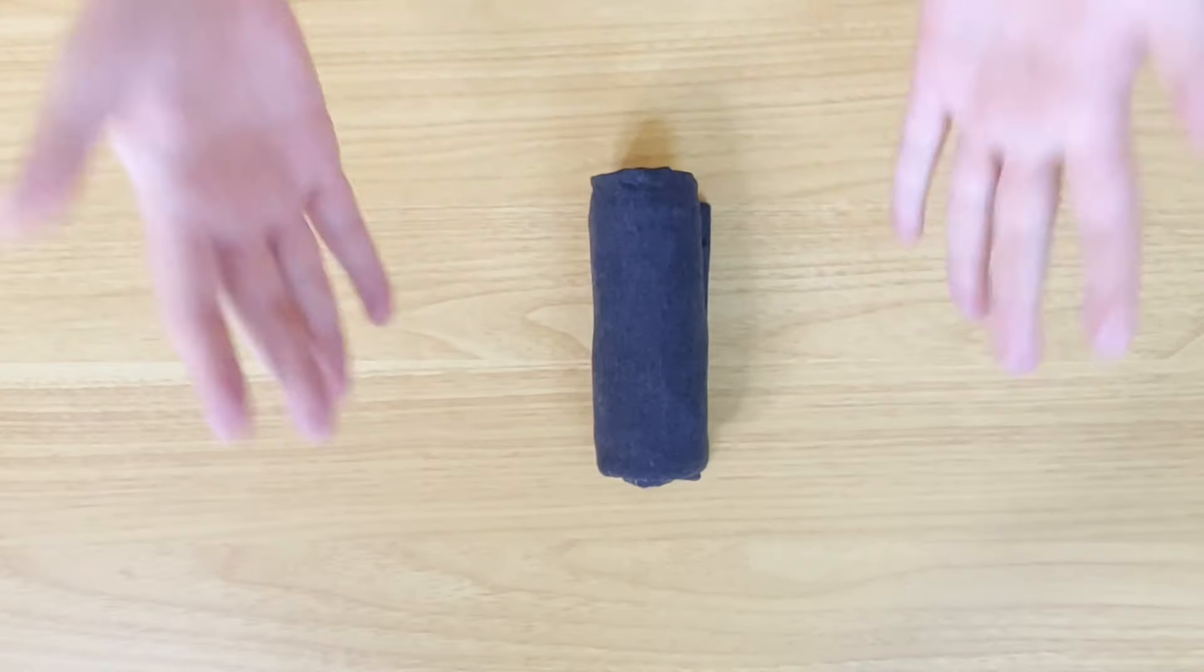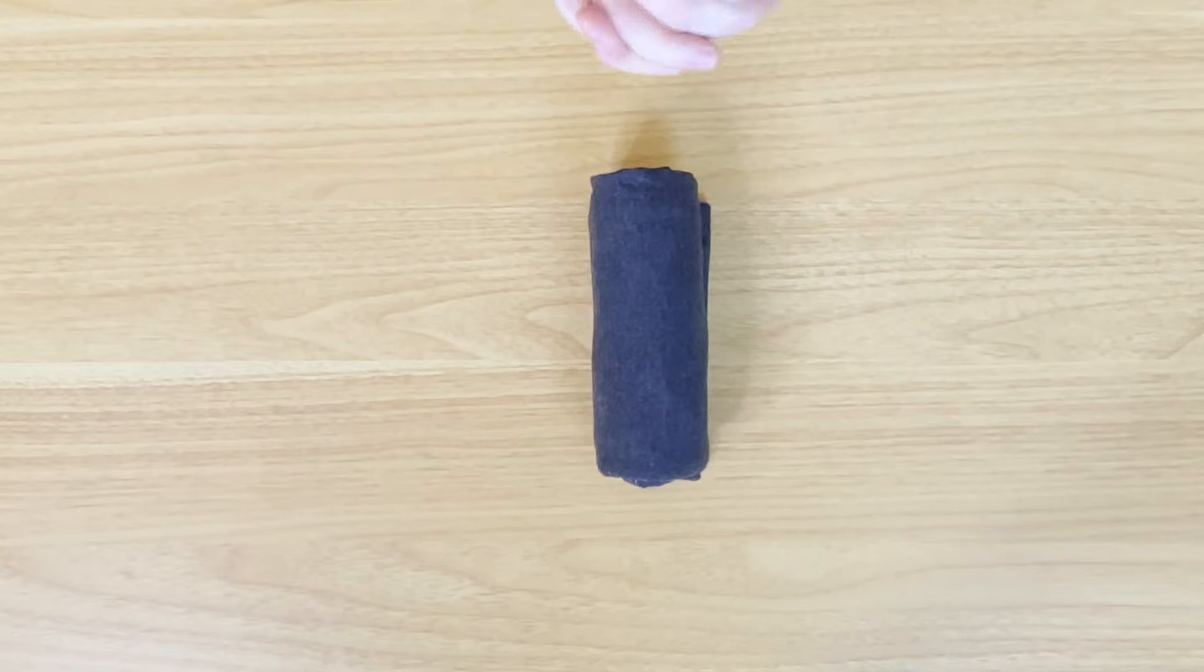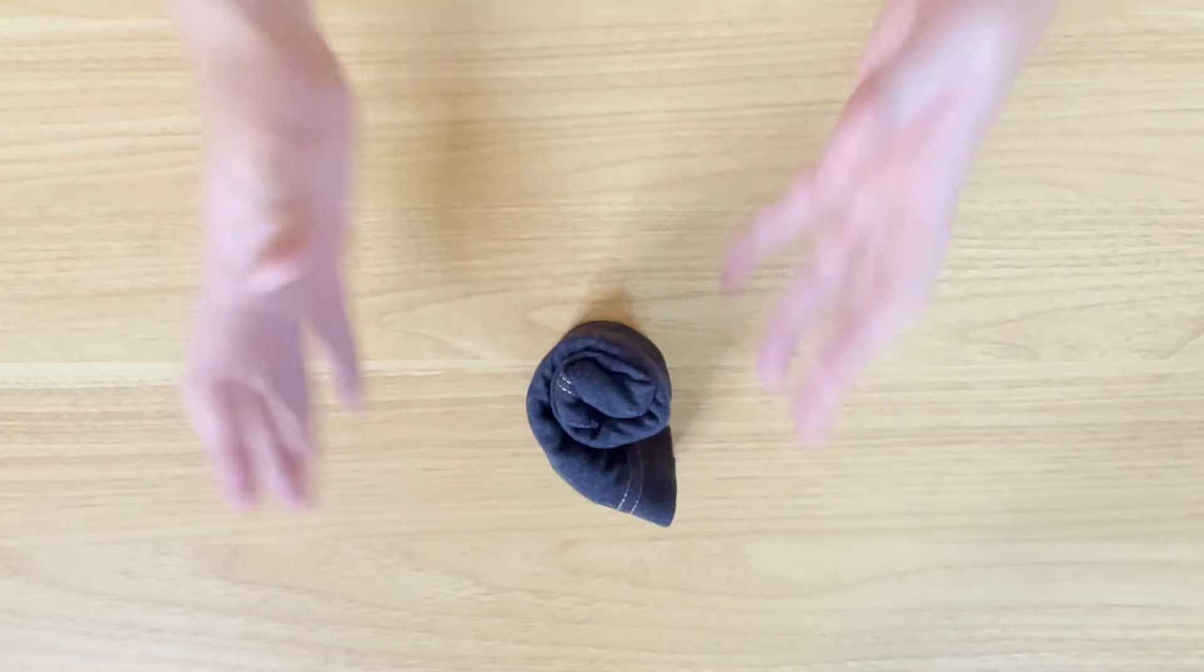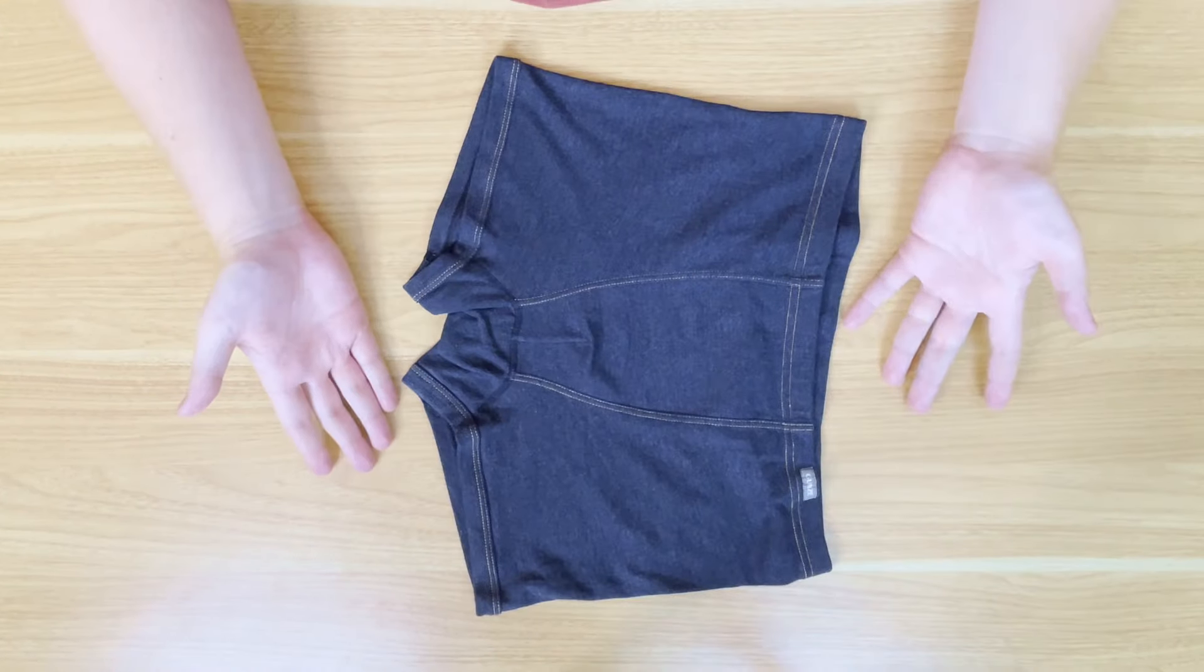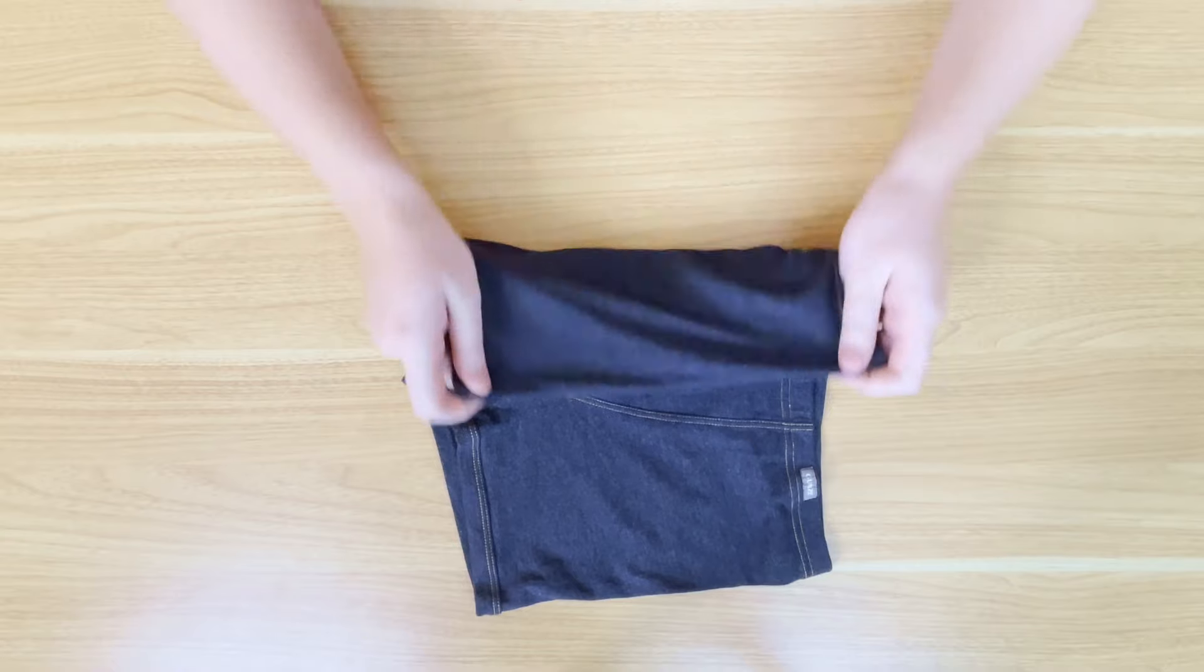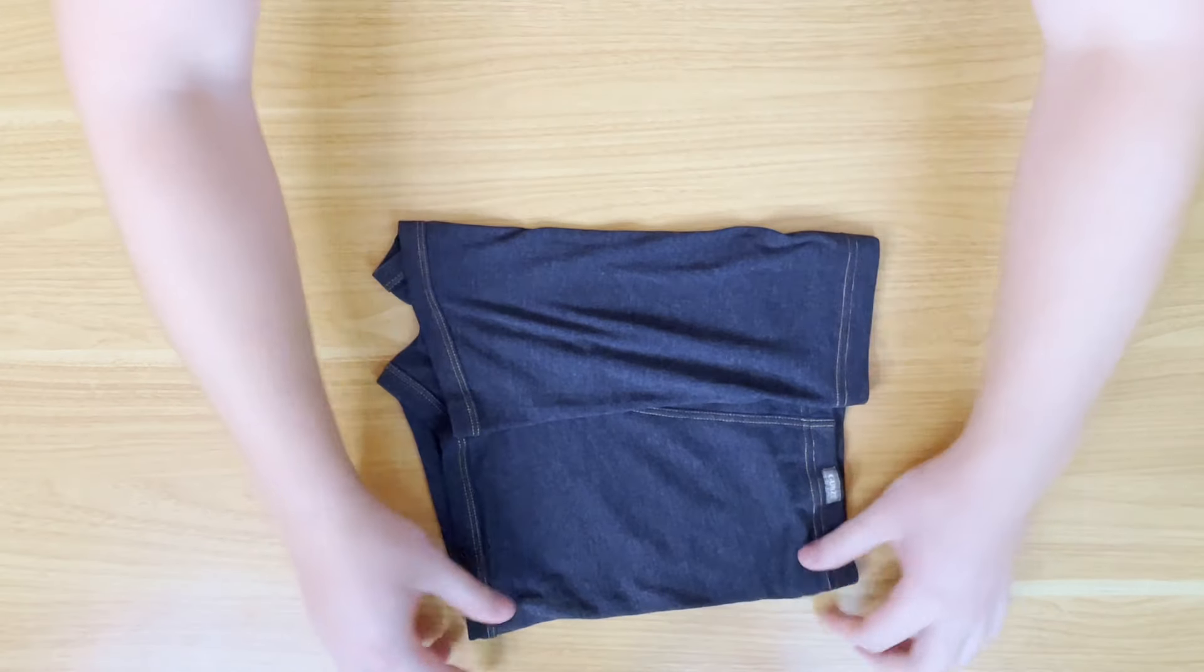Now those are the folds, right? But I want to show you some rolls as well. Rolls are awesome because they take up even less space, and also the rolls you can use for travel. The first one I'm going to show you here is pretty crease resistant as well. Not that it really matters for boxers. You can even place them standing up if you're so inclined. So how do we roll up boxer briefs?